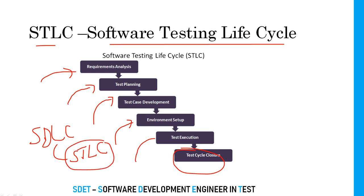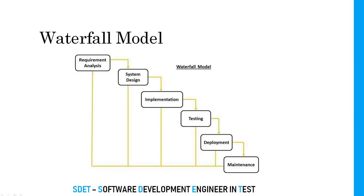These different phases come under the STLC — Software Testing Lifecycle — which is part of the overall SDLC. SDLC is the complete development process, but inside it, STLC talks about the testing process: how to understand requirements, how to plan, how to write test cases, how to set up the environment, how to execute test cases, and how to find defects.